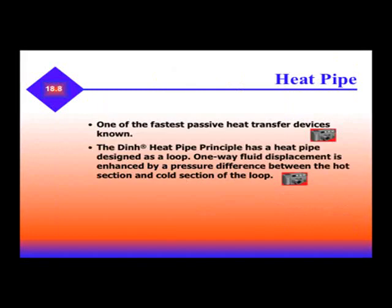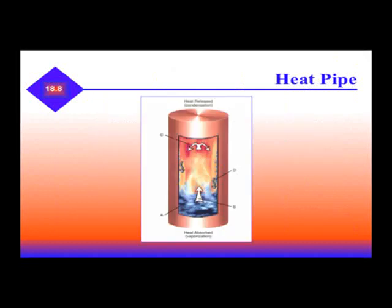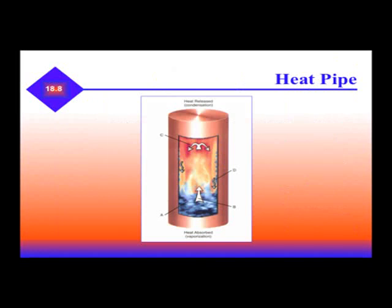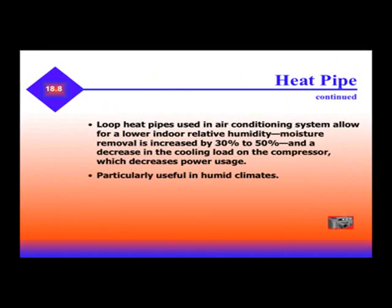The heat pipe is one of the fastest passive heat transfer devices known. The DIN heat pipe principle has a heat pipe designed as a loop. One-way fluid displacement is enhanced by the pressure difference between the hot section and the cold section of the loop. Heat is absorbed and heat is released through condensation. The higher the temperature, the more moisture is removed. Loop heat pipes are used in air conditioning systems, allowing for lower indoor relative humidities, with moisture removal increased by 30 to 50% and a decrease in the cooling load on the compressor, which decreases power usage.